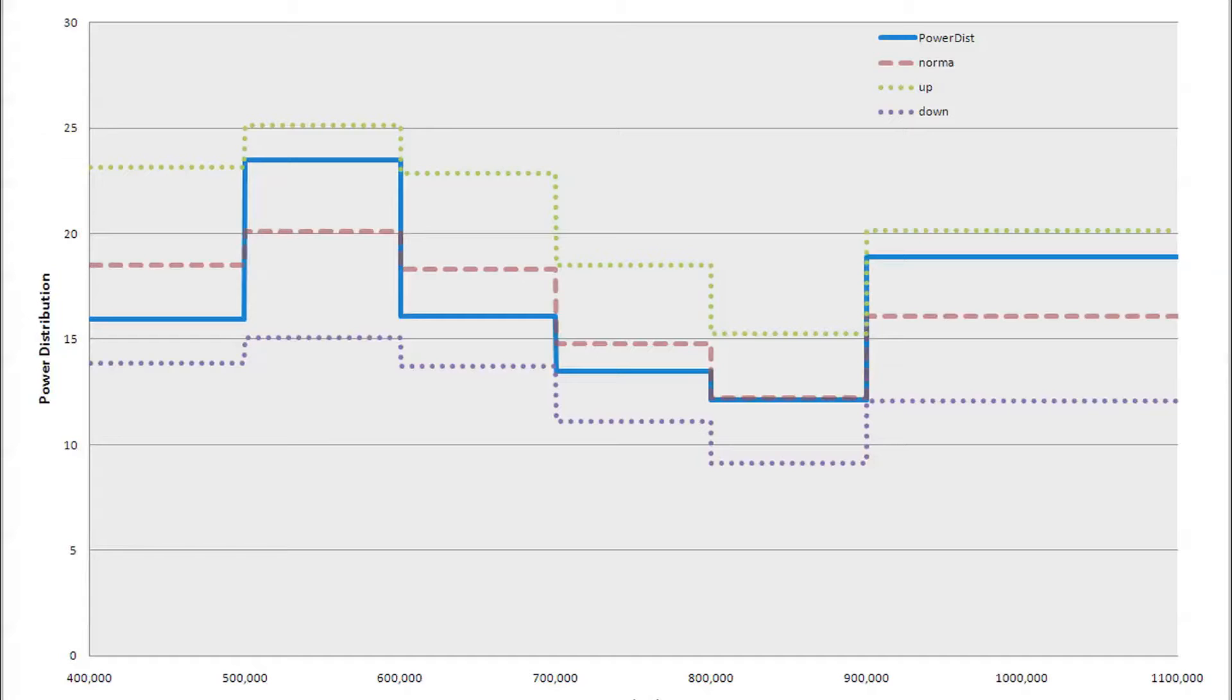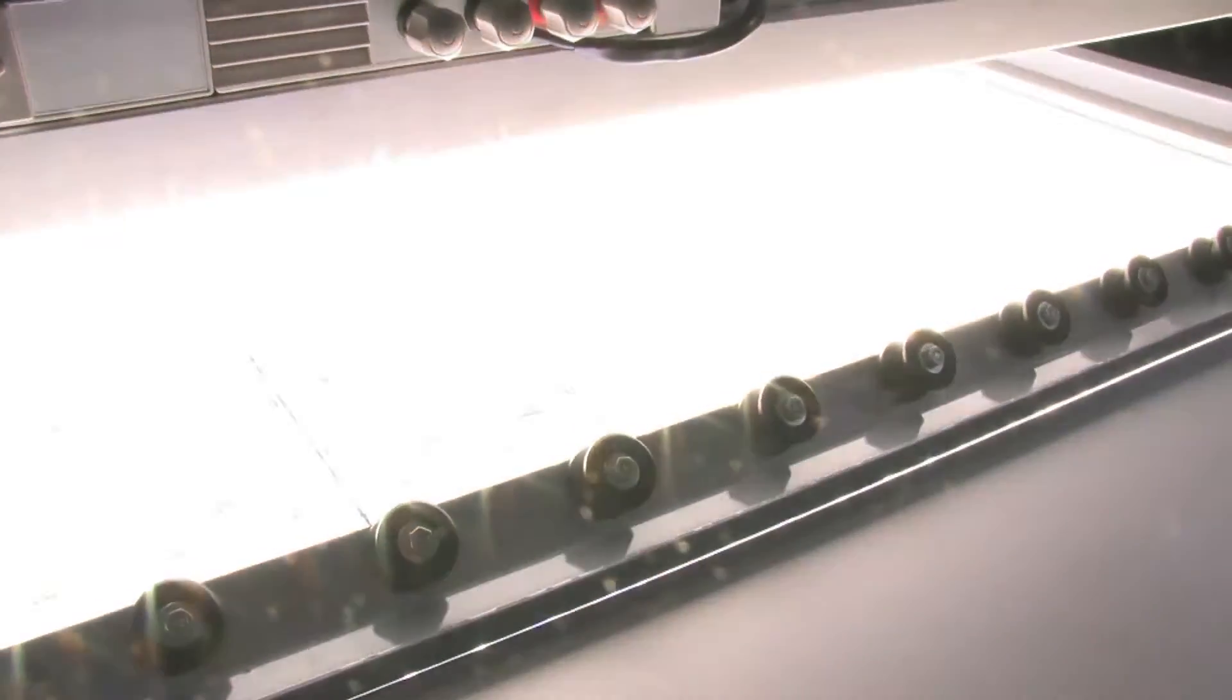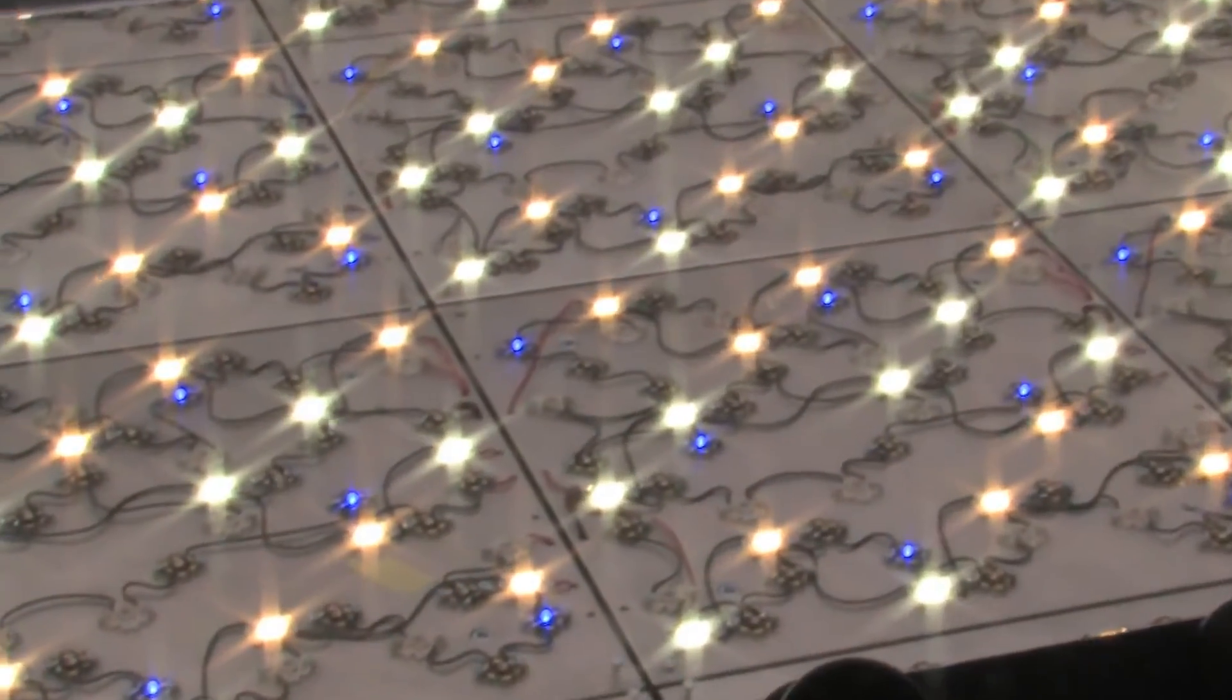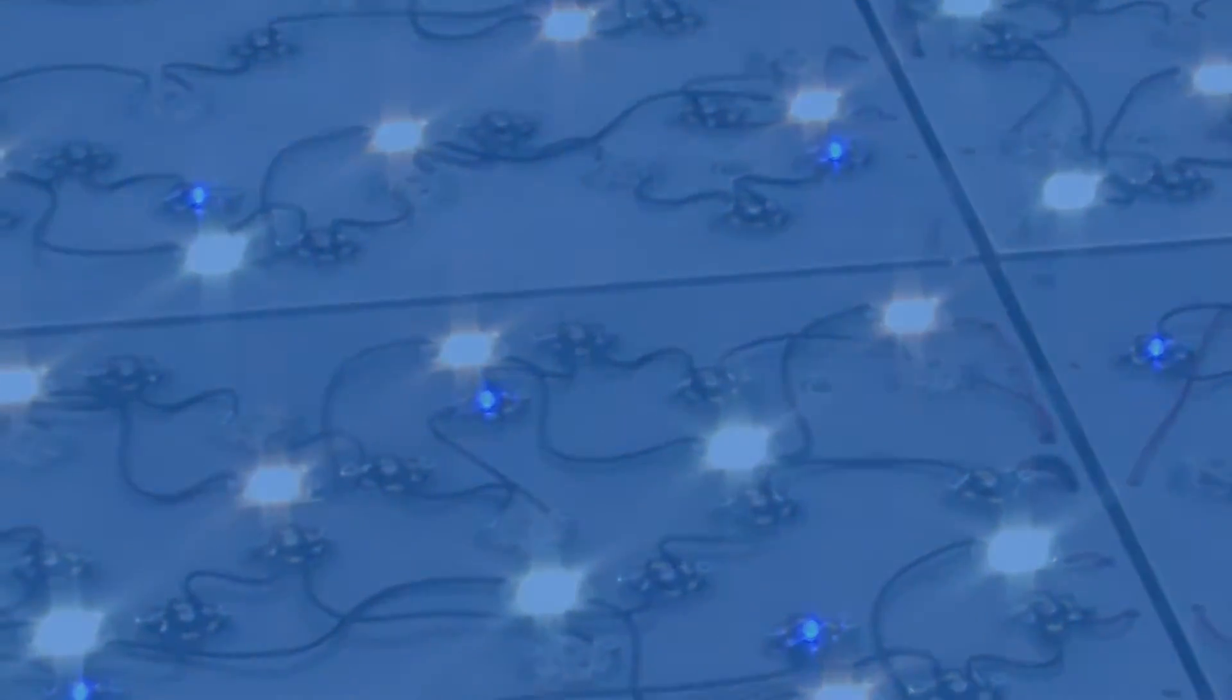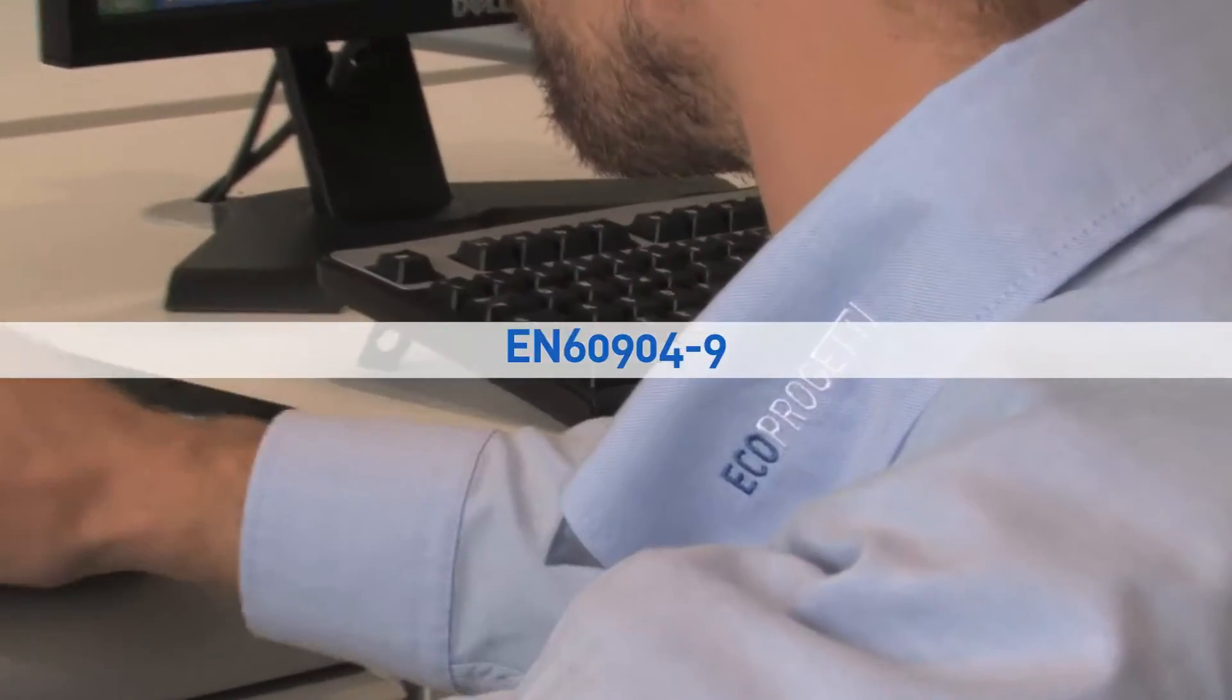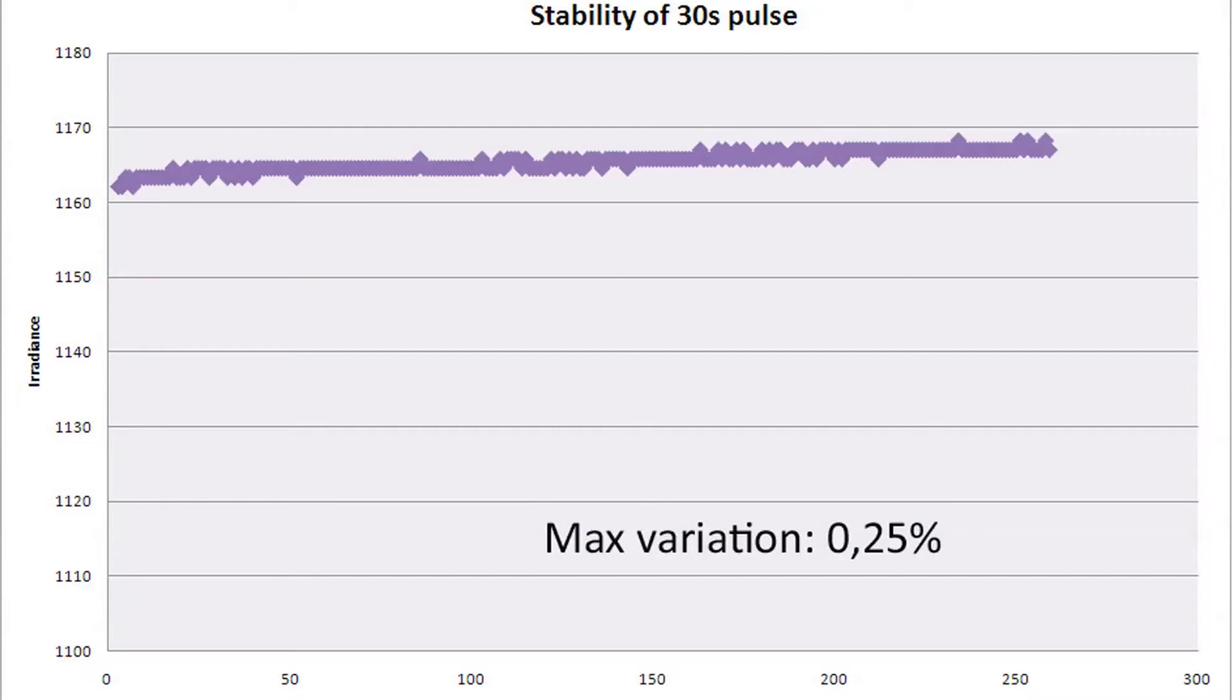Spectral power distribution. The light spectrum complies with air mass 1.5 standard, which means that it covers the complete range from 400 nm to 1,100 nm, with the specified power distribution foreseen by the norm EN 60904-9. This permits to perform module testing without correcting and compensating the measured data.